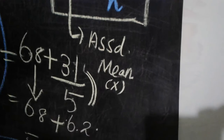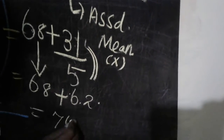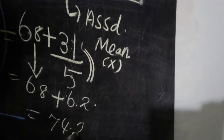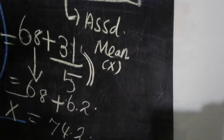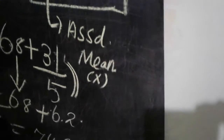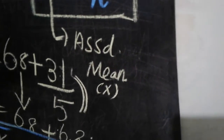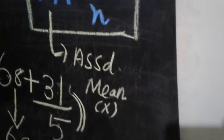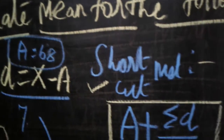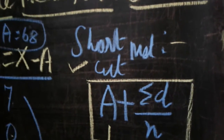So x̄ = 68 + 6.2 = 74.2. That is the x̄ value we are getting. This is the shortcut method to calculate the mean for the given data.